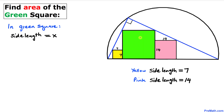Now let's focus on the green square and assume its side length is x. Since all sides are equal, each side is x. We know the yellow square's side is 7, so one segment measures x minus 7. Likewise, the pink square's side is 14, so another segment measures x minus 14.